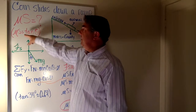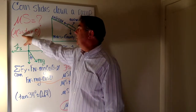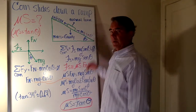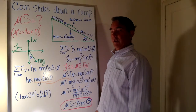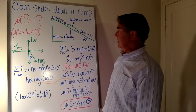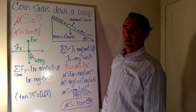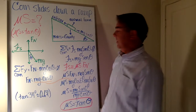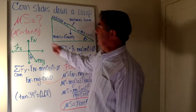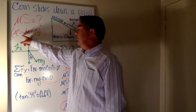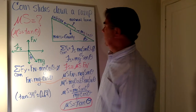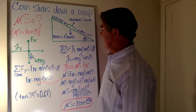The short answer is that the coefficient of static friction is equal to the tangent of the angle at which the ramp is elevated. But the more important question is: what's the process, the mathematics, and the physics behind coming up with that answer?